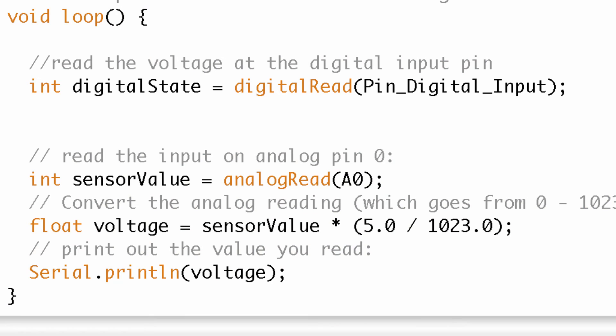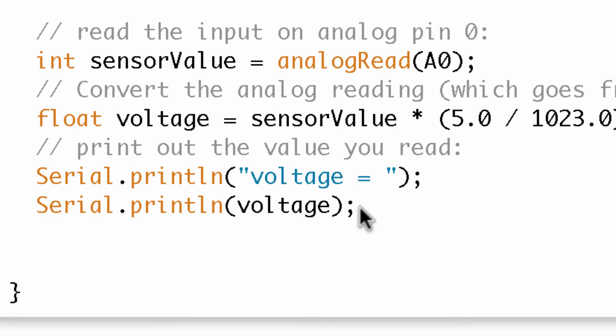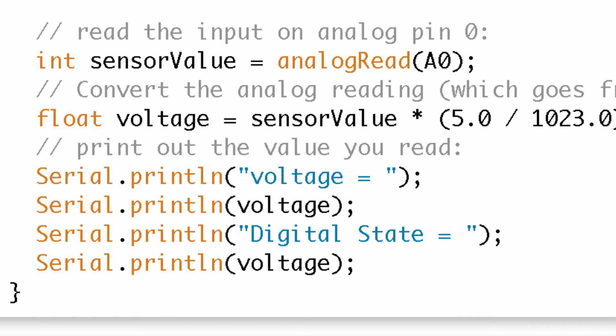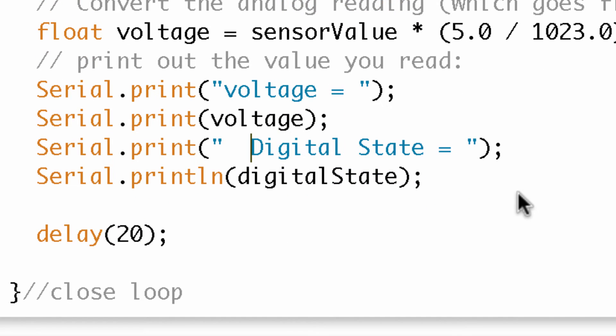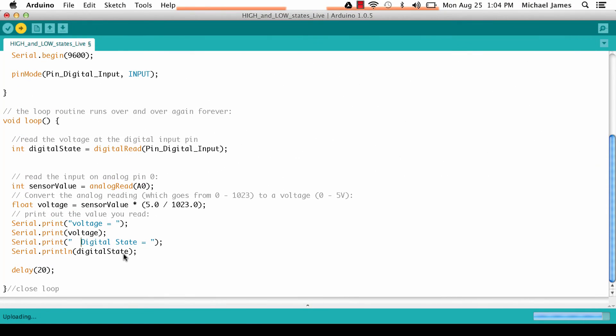Now what we want to do is visualize this on the serial monitor. I'm going to print some information to the serial port so we can see the voltage at the pin right next to the digital state. I've set up some information to be printed out on the serial monitor so we know exactly what's going on. We'll print the word voltage and then show the voltage value, and then we'll print the word digital state and show that digital state, either a zero or a one. That's all going to be on the same line.